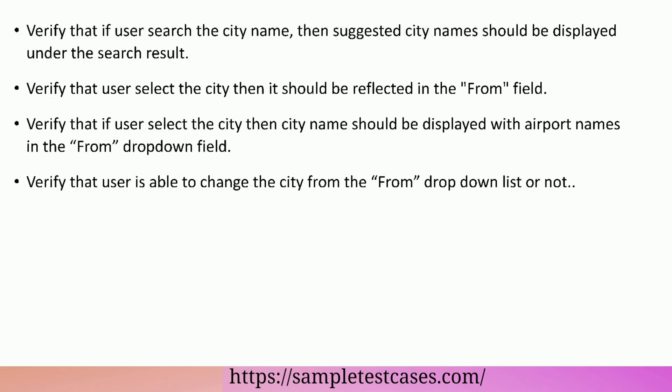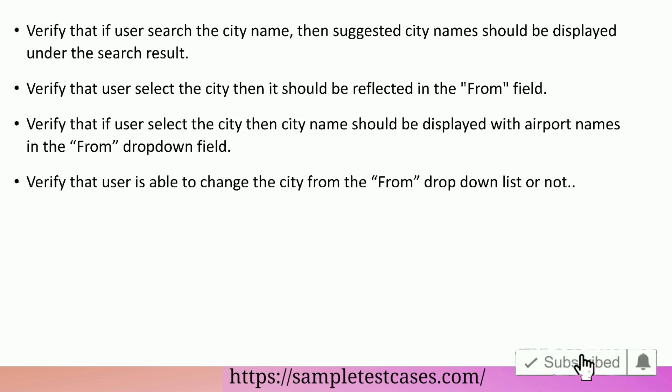Verify that user is able to manually search city name or not. Verify that if user searches the city name then suggested city name should be displayed under the search result. Verify that when user selects the city then it should be reflected in the from field, and city name should be displayed with airport names in the from drop-down field. Verify that user is able to change the city from the from drop-down list or not.